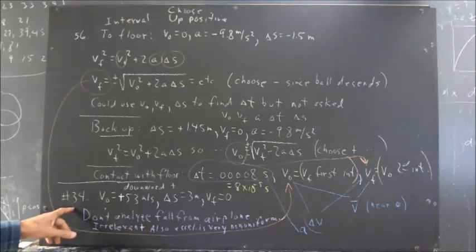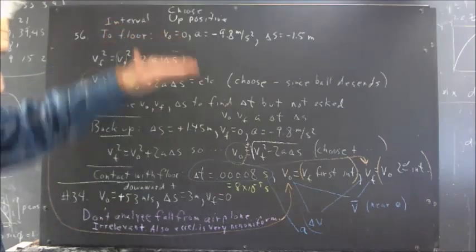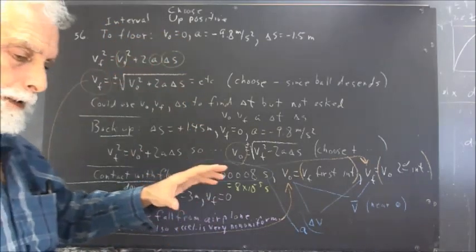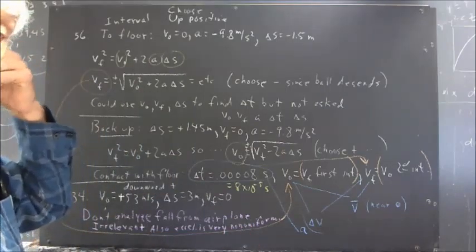Okay, problem 34 is a problem of an airman falling from a plane, jumping out of a burning plane, falling and landing in a three meter snow drift.